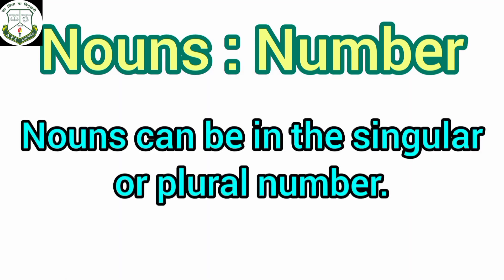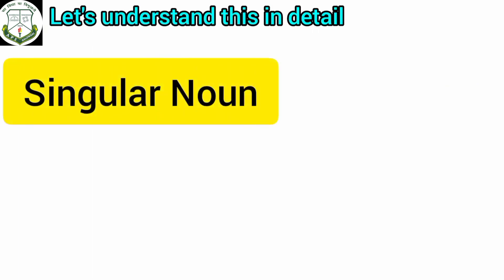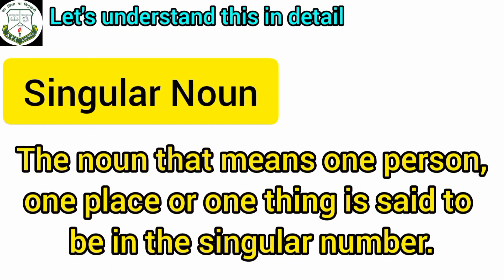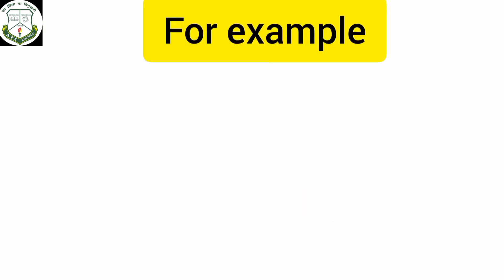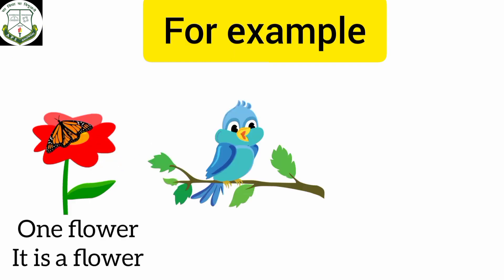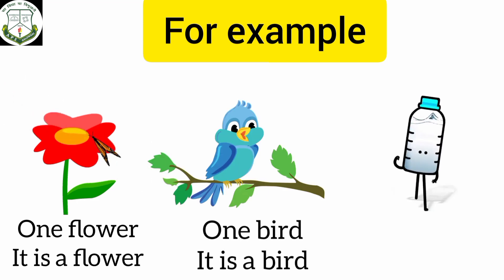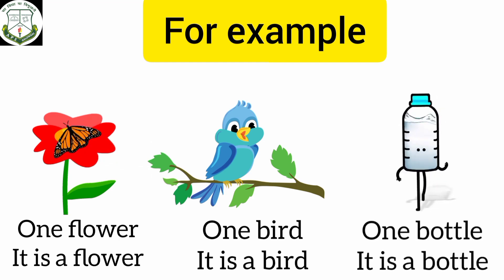Nouns can be in the singular or plural number. What is a singular noun? The noun that means one person, one place or one thing is said to be in the singular number. For example, one flower — it is a flower. One bird — it is a bird. One bottle — it is a bottle.